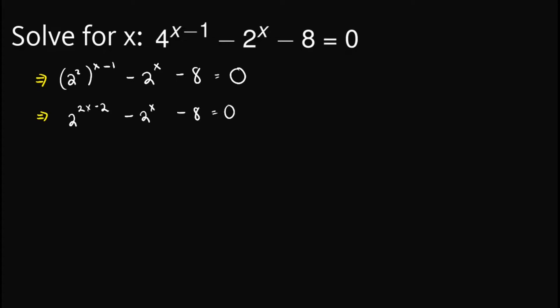From here, we can split this up by our idea on laws of exponents. And so, we will have 2 raised to 2x times 2 raised to negative 2 minus 2 raised to x minus 8 equals 0.